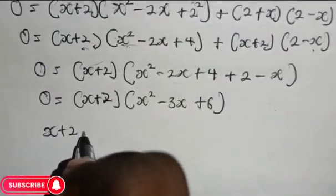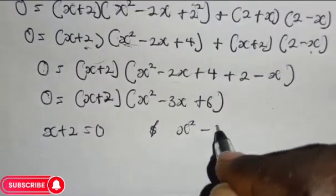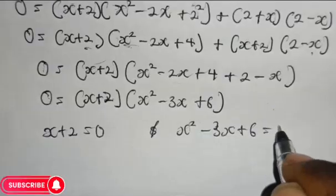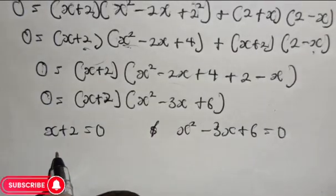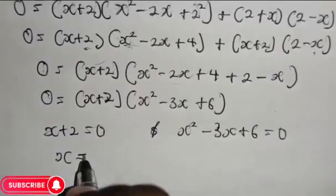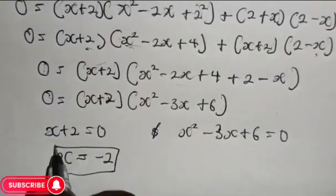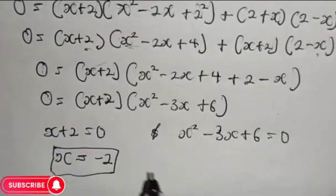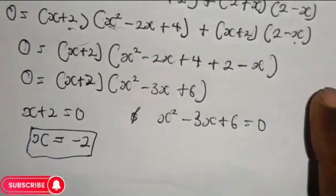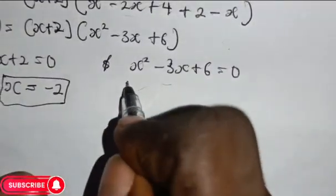This implies that s plus 2 is equal to 0, and s squared minus 3x plus 6 is equal to 0. From the first equation we get our value of s which is minus 2, which is also an integer. Now let's look for the other two values of s, which may be complex or real.